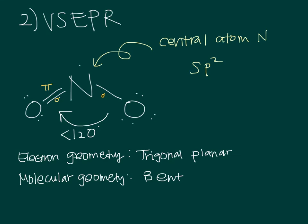Moving on to the VSEPR diagram, based on the information we gathered from the Lewis structure, we know that it's going to be an sp2 hybridization orbital and a bent shape. We have a double bond, a single bond, and a free electron. Based on the VSEPR rules, for a bent molecule, we're going to have a less than 120-degree bond angle for the bonding atoms. It's also good to know that we have a sigma bond and another sigma bond and a pi bond, so we're going to have one pi bond and two sigma bonds forming in this molecule.